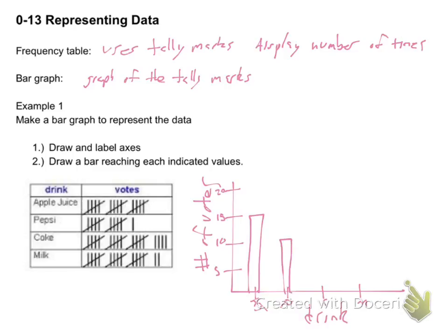Coke goes up to 19. Just below 20 and over. And milk goes to 17.